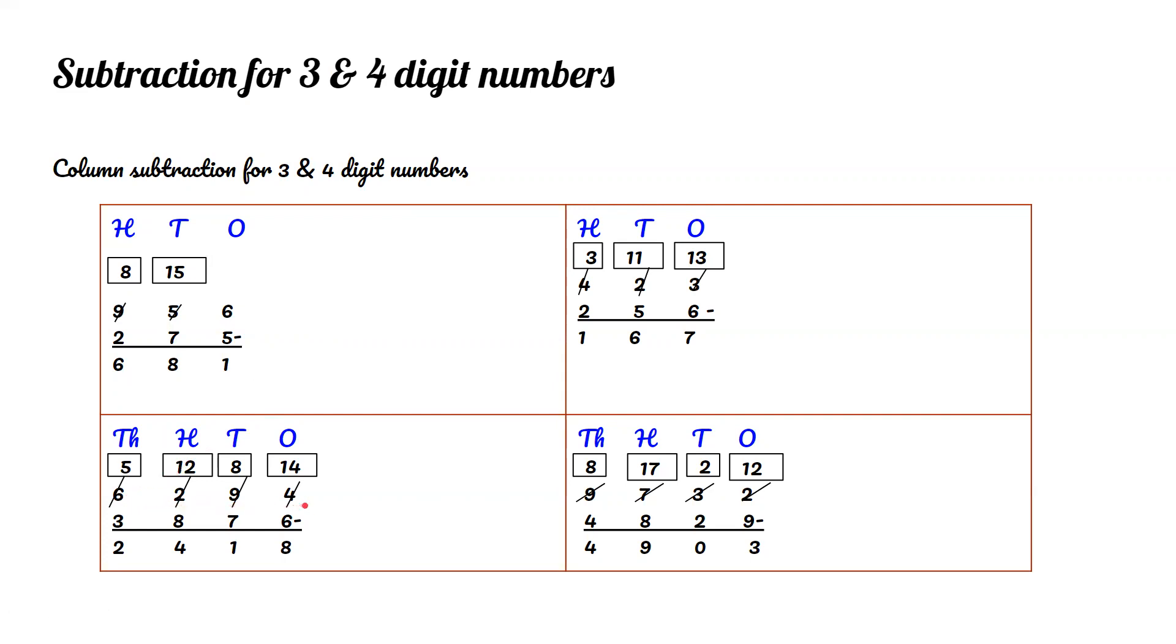6,294 minus 3,876. Since the 4 is less than the 6, we have to go to the tens place and make the 9 an 8 and the 4 a 14. 14 minus 6 equals 8. And 8 minus 7 equals 1. Since the 2 is less than the 8, we go to the thousands place and make the 6 a 5 and the 2 a 12. 12 minus 8 equals 4. And 5 minus 3 equals 2. So 2,418 is the answer.